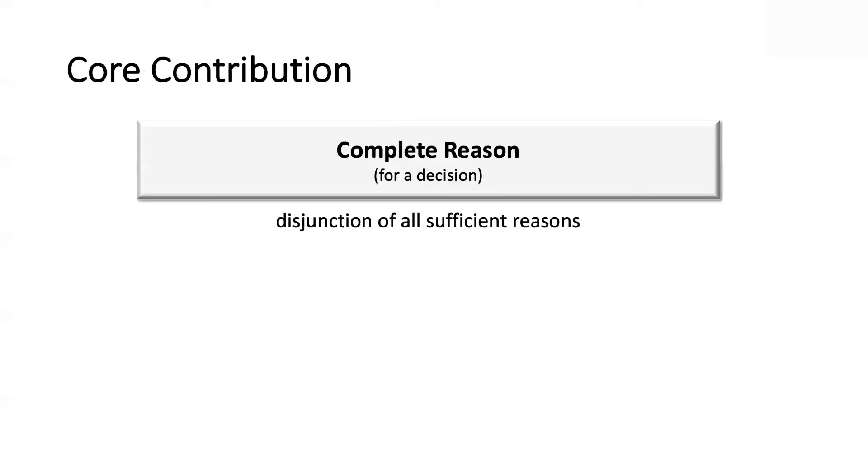So the core contribution, as I mentioned in this paper, is the notion of a complete reason being a disjunction of all sufficient reasons. The reason we care about it is that we want to avoid computing sufficient reasons explicitly in some cases. We'll see an example of that.